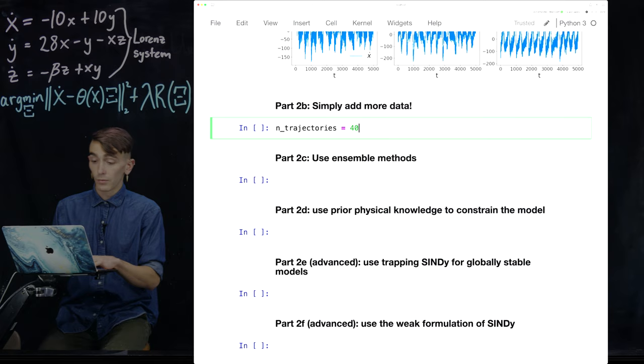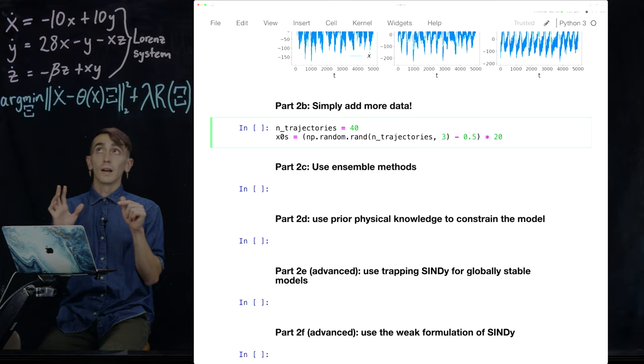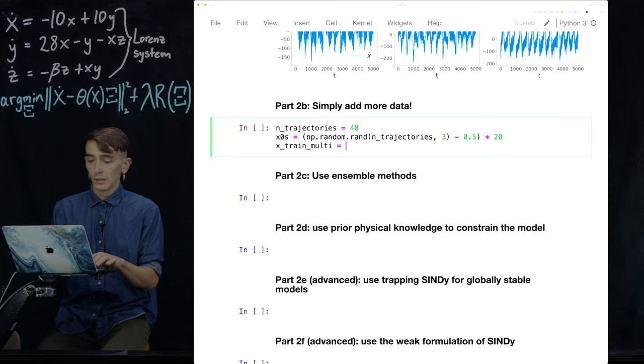So we're going to randomly initialize 40 different initial conditions. So, and they're all going to be between minus 10 and, so x, y, and z initial conditions are all going to be between minus 10 and 10, but otherwise they're totally random. Then we're just going to collect all the training data and we're going to loop through these initial conditions.